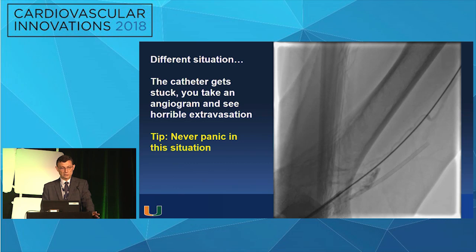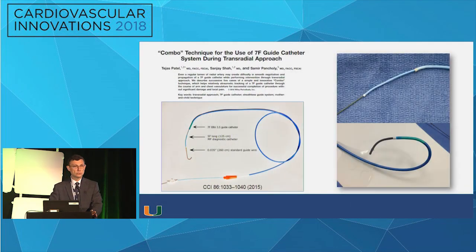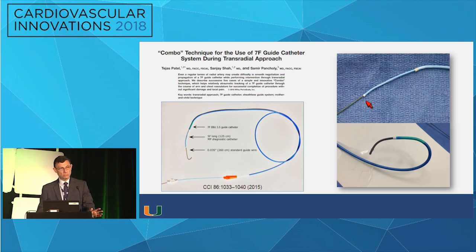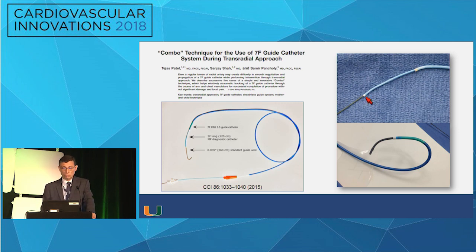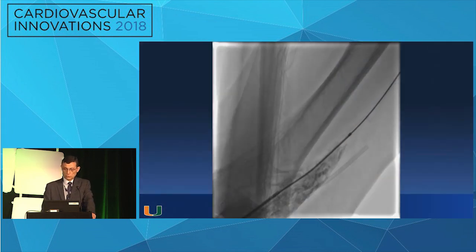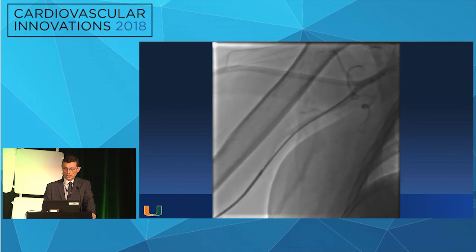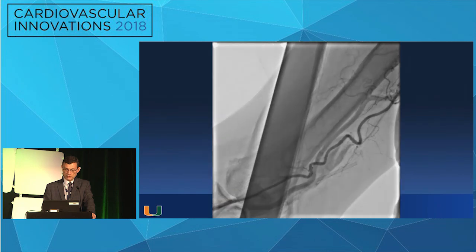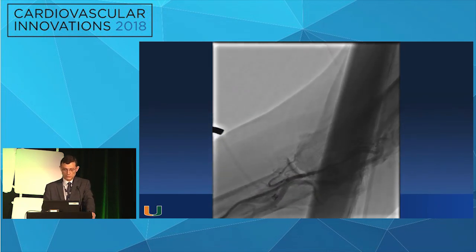A different situation: the catheter gets stuck and you see horrible extravasation. Never panic — there's a solution. The solution is to use the mother-and-child technique, or the combo technique as Tejas Patel shows it. You have an 0.035 wire across — don't pull the wire. You want to tamponade the vessel from the inside. You telescope a long 125-centimeter multipurpose catheter — or one of those dilators for the shuttle sheath — to create a transition. You advance, that creates a transition, the whole assembly moves forward, and then at the end of the case, the pullback angiogram shows you have successfully tamponated the extravasation.